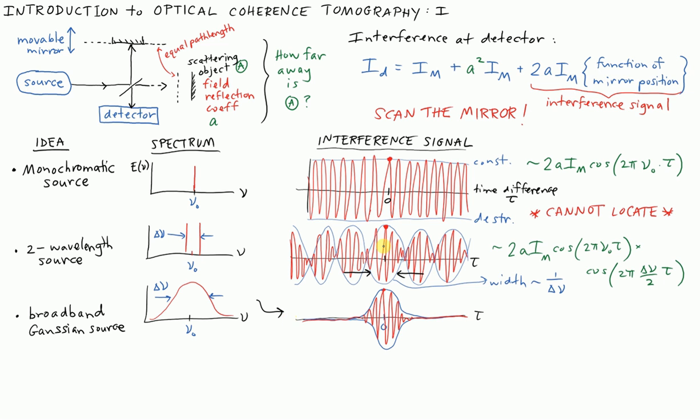The envelope ends up looking like this. All you get is a single burst pattern, and it tapers off to zero at all other detunings. All the same parallels from the previous example hold. This width goes as 1 over the bandwidth, so the broader the bandwidth of the source, the narrower the response function as you sweep the mirror. This function is very similar. It's 2AI_M with the same sort of cosine term describing the red oscillations, but then we have a Gaussian envelope. The broader the bandwidth, the sharper the response, and the more precisely you know exactly where that scattering object is.